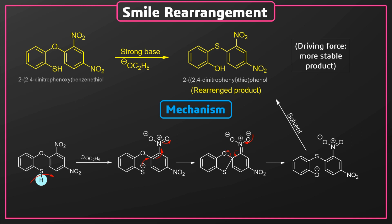The negative charge is then stabilized with a proton. The conditions required for the reaction: a strong base is required as the reagent — for example, sodium amide, sodium ethoxide, etc. The substrate must have an acidic hydrogen on the other functional group. This rearrangement commonly takes place in dinitrobenzene derivatives.